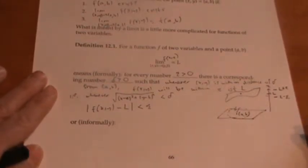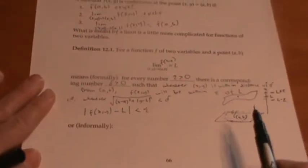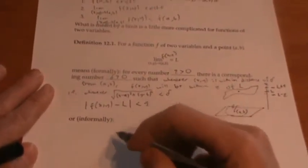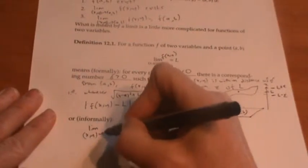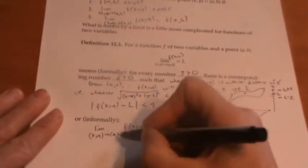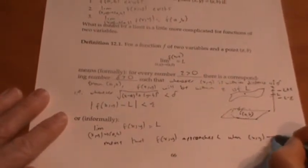That's the formal definition, which I wanted you to see so you'll be more familiar with it if you take further classes like mathematical analysis or advanced calculus. For practical purposes, we'll use a more informal definition similar to Calculus 1: the limit as (x, y) goes to (a, b) of f(x, y) equals L means that f(x, y) approaches L when (x, y) approaches (a, b) along any path.